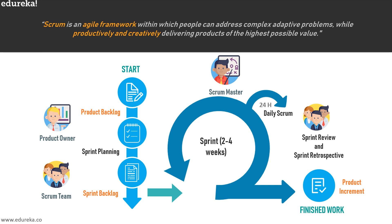The product owner, scrum master, and team together create a list called the product backlog. They pick up a few tasks from the backlog and put them in the sprint backlog to work on during the sprint. After the sprint is done, that working product is sent for review or feedback, and the same cycle begins again. During the sprint, different kinds of meetings take place: sprint planning, daily scrum, sprint review, and sprint retrospective.